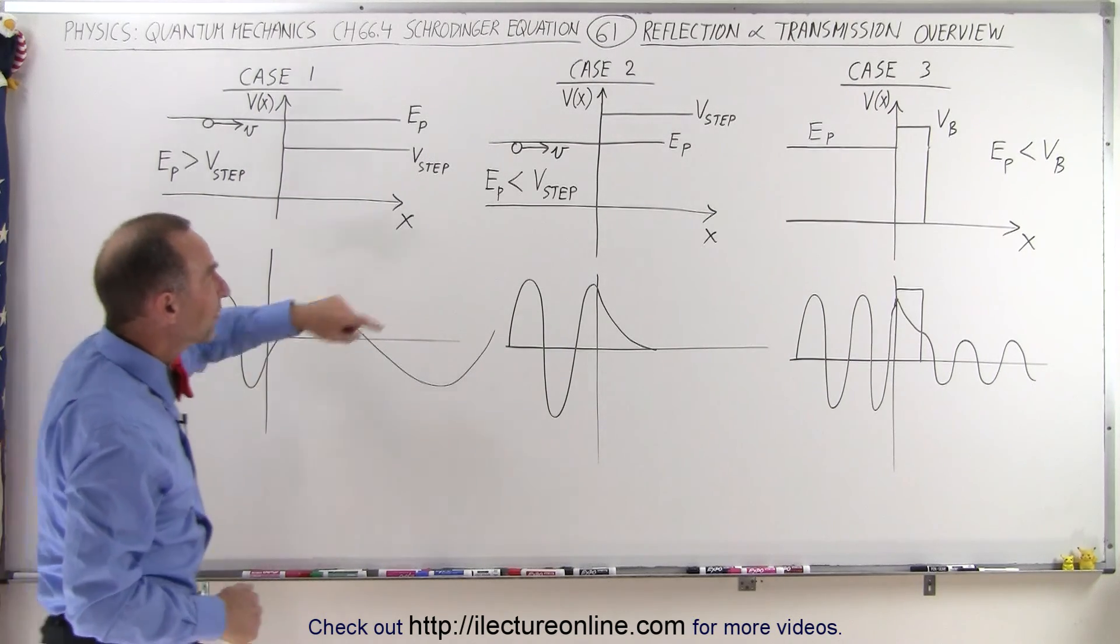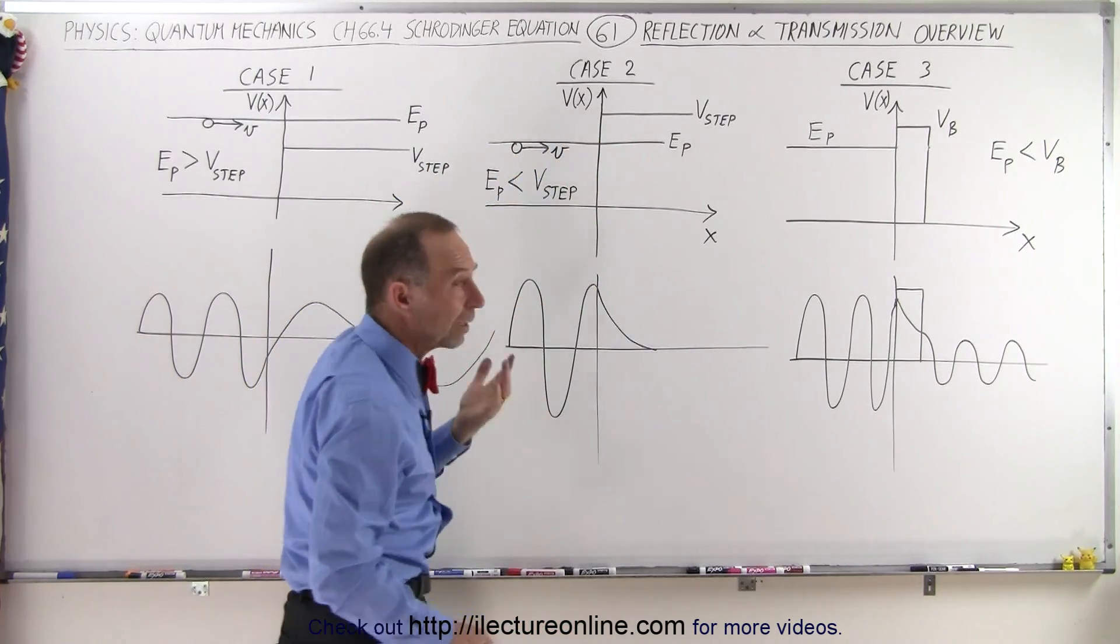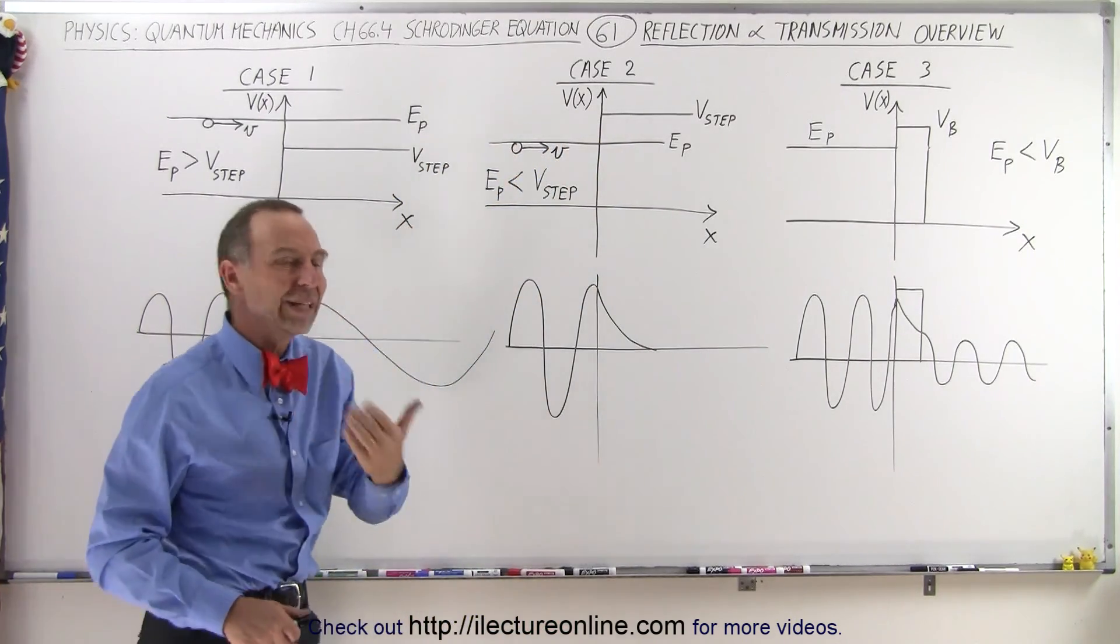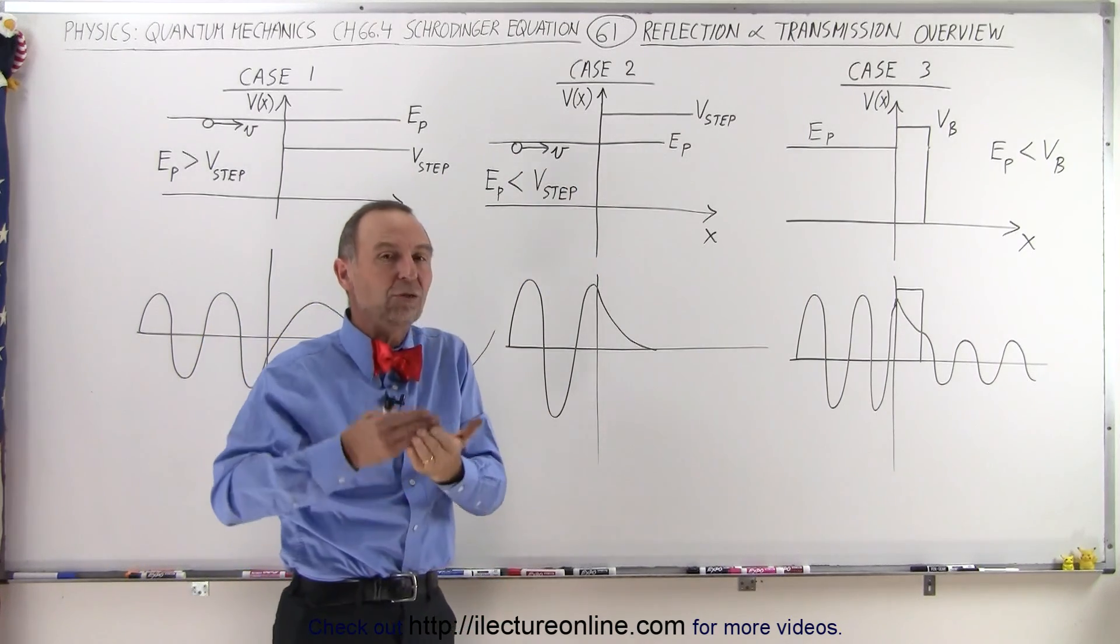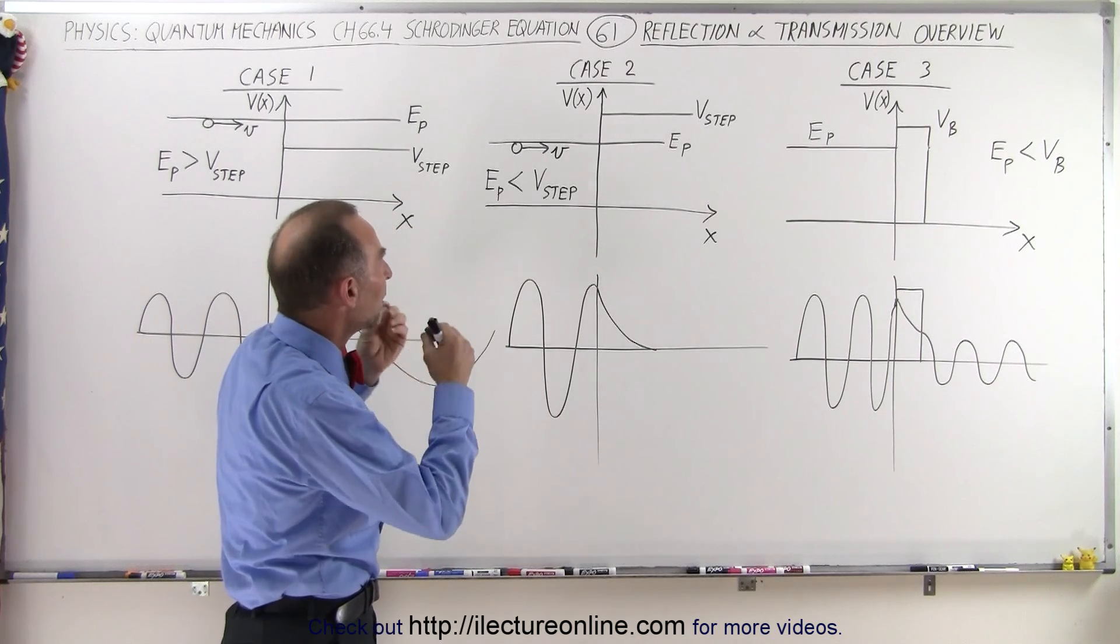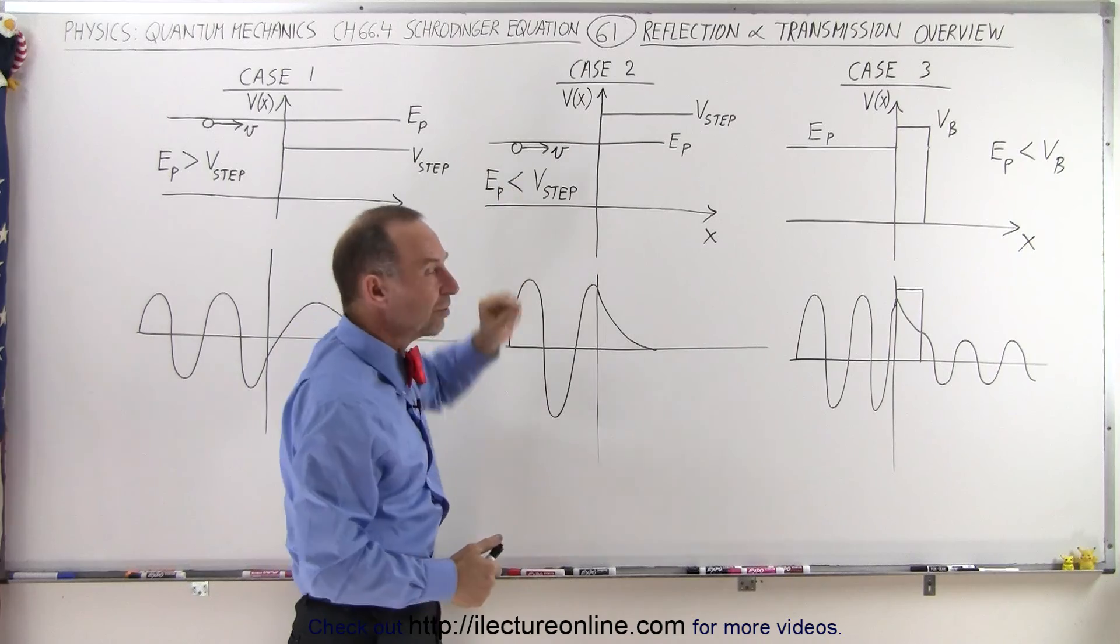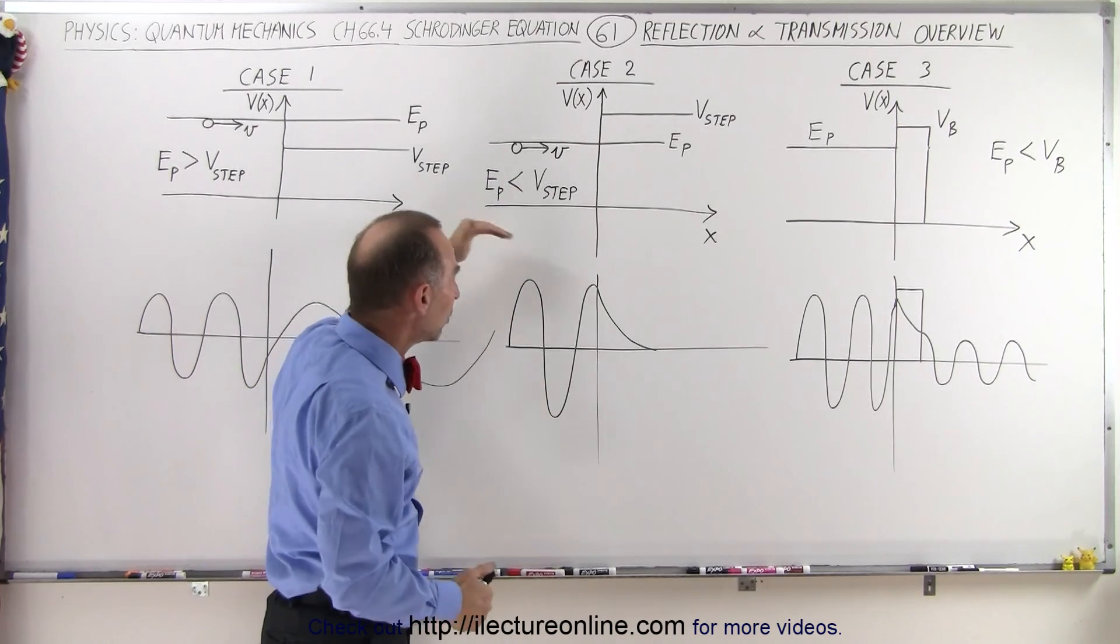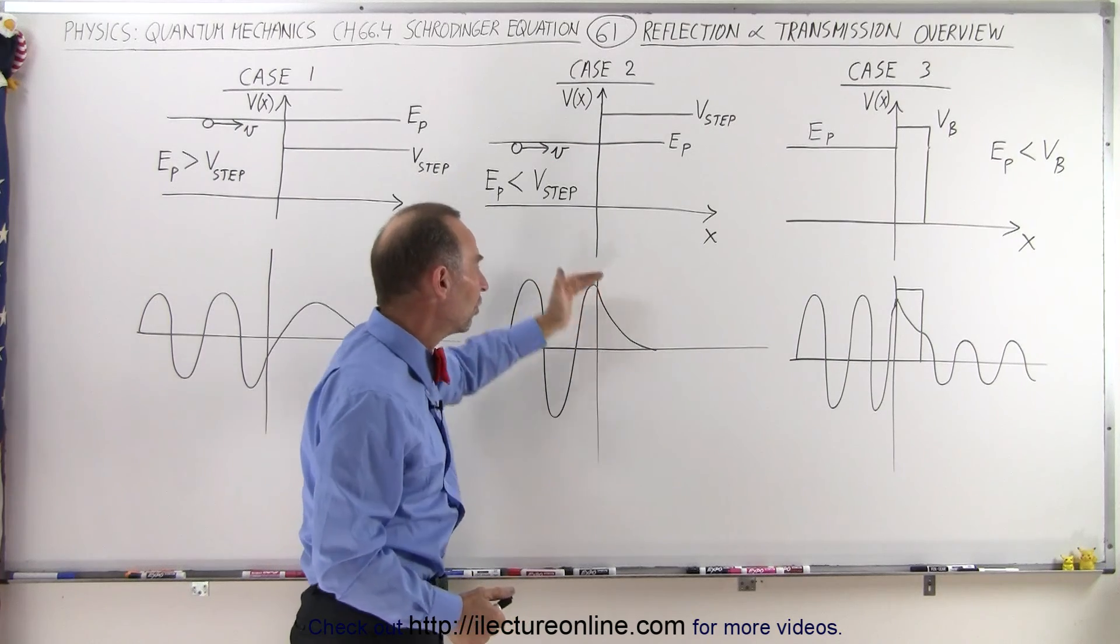In case 2, if the energy of the particle is less than the energy of the step, you would say there's no way the particle can continue past this point. It will simply get reflected. In the classical sense, 100% of the particles will be reflected. But what we see in the quantum mechanic world is that some particles have a small probability that they will continue into that barrier, into that step, for a certain distance.